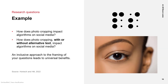Let's look at how applying an inclusive lens to your research questions improves your research. Take the following research question: How does photocropping impact algorithms on social media? While this is a reasonable approach, a more inclusive question would factor in the different ways people access imagery. The revised question might look like this: How does photocropping, with or without alternative text, impact algorithms on social media?